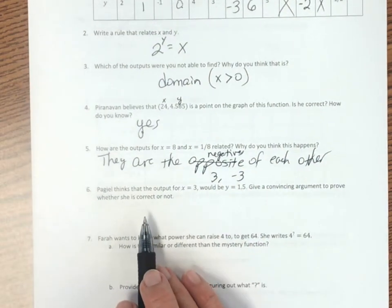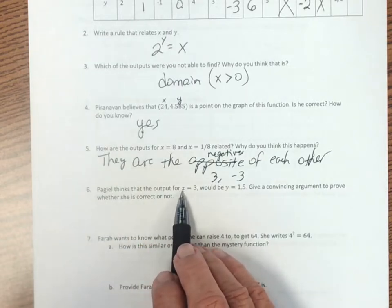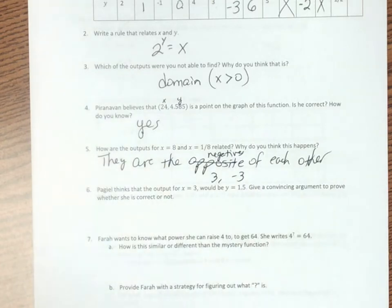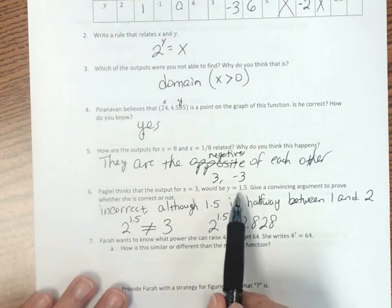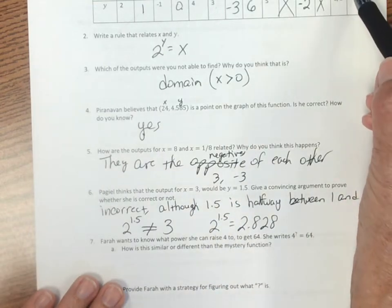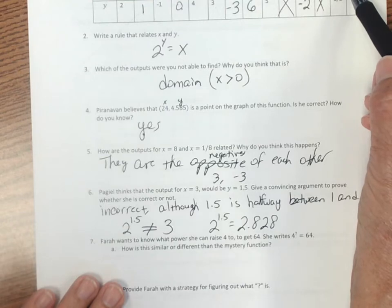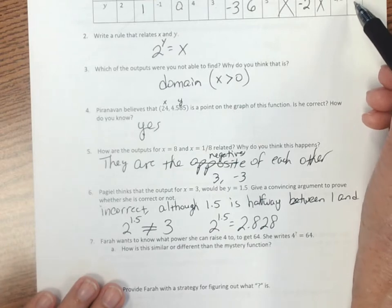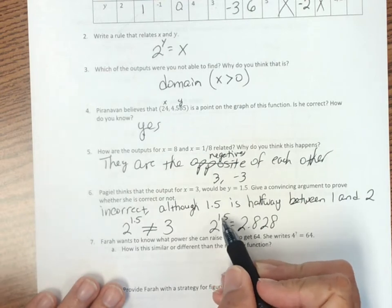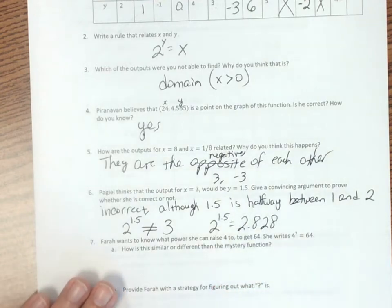Number 6. They think that the output for x equals 3 should be 1.5. So take a moment and think about that before we take a look at what the actual answer is. So this is an incorrect assumption here. So x to the third. So even though 1.5 is halfway between 1 and 2, that does not give us a 3. Anything to a half power is a square root. So that's not right.